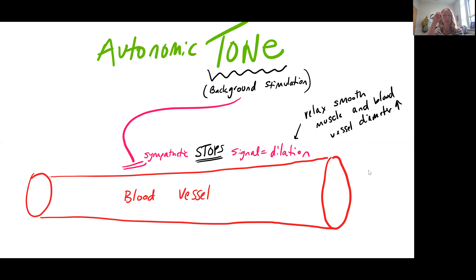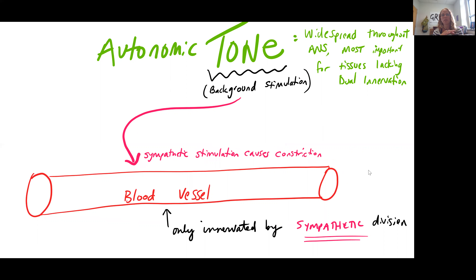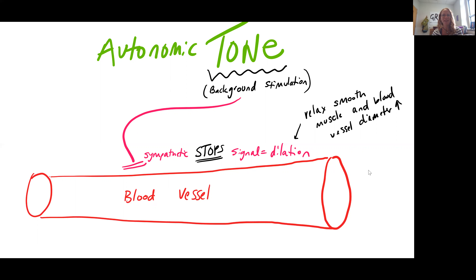The only way stopping the signal can allow this range from very constricted to very dilated is if you have the autonomic tone, which allows a little bit of stimulation all the time to that tissue. We'll see autonomic tone widespread throughout the autonomic nervous system, but especially important when tissue is not dually innervated — and the smooth muscle of our blood vessels, controlled only by the sympathetic division, is a great example. And that's it.